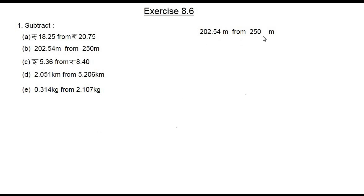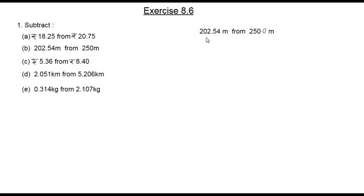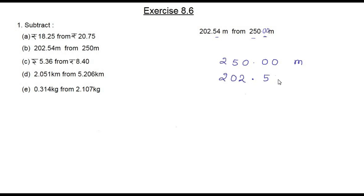The second question is: 202.54 meters from 250 meters. Here the first number is in decimal form but 250 does not have a decimal point, so we convert it — we add a decimal point and write 250.00. We check: both numbers have three digits before the decimal point. After the decimal point we need two digits, so we add one zero to make 250.00.